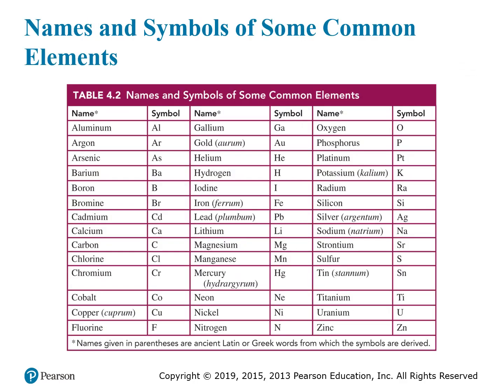Here we have a larger table with some elements and their symbols. Most of the symbols are derived directly from the element names as we know them. For instance, aluminum — the symbol is just Al, the first two letters of aluminum. Argon is Ar.